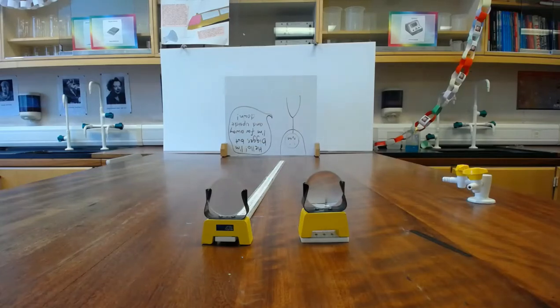Today we're investigating refracting telescopes. These telescopes use two convex lenses to project far away images to our eyes. A convex lens is a lens which is thicker in the middle than it is at the edges.